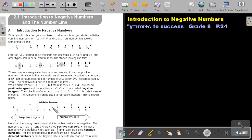Note that the integer 0 is neutral. It is neither positive nor negative. The numbers such as 3 quarters and 0.6 are called positive numbers.